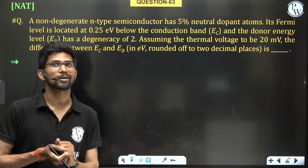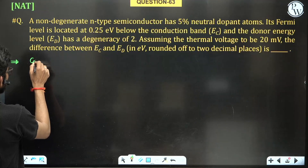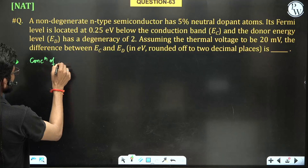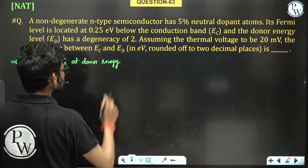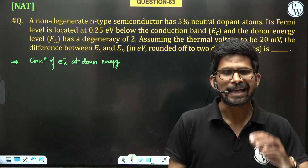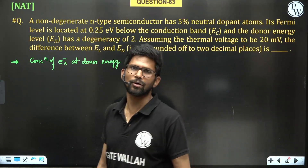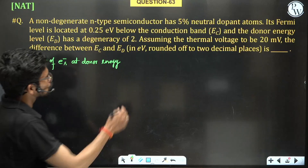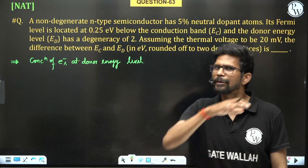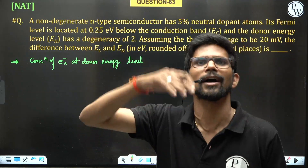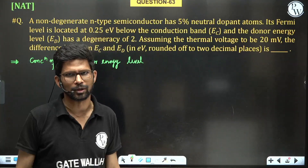But if all the donor levels are not getting ionized, then there is a concentration of electrons at the donor energy level. Because if all donor levels were ionized, there would be no electrons at the donor energy level — all fifth electrons would be in the conduction band.